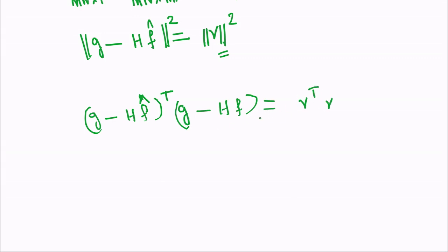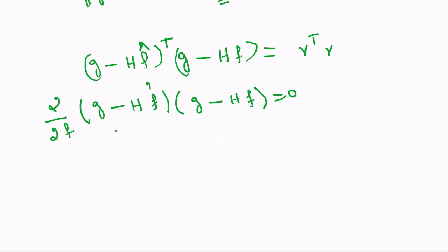If you want to minimize this quantity, then the derivative of this quantity, that is d by d f hat of g minus h f hat transpose g minus h f hat should be equal to 0. When we solve this, I am not showing the derivation of this relation completely. When you solve this, at the final step you can come up with an equation as H transpose H into f hat is equal to H transpose g.